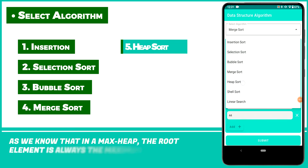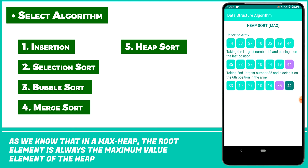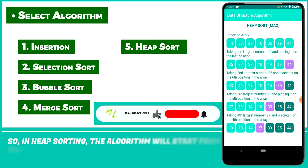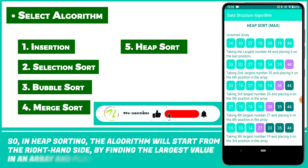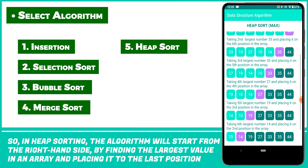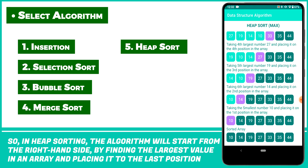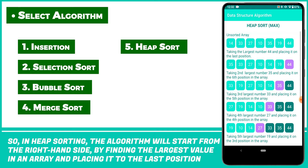As we know, in a max heap the root element is always the maximum value element of the heap. So in heap sorting, the algorithm will start from the right-hand side by finding the largest value in the array and placing it to the last position.